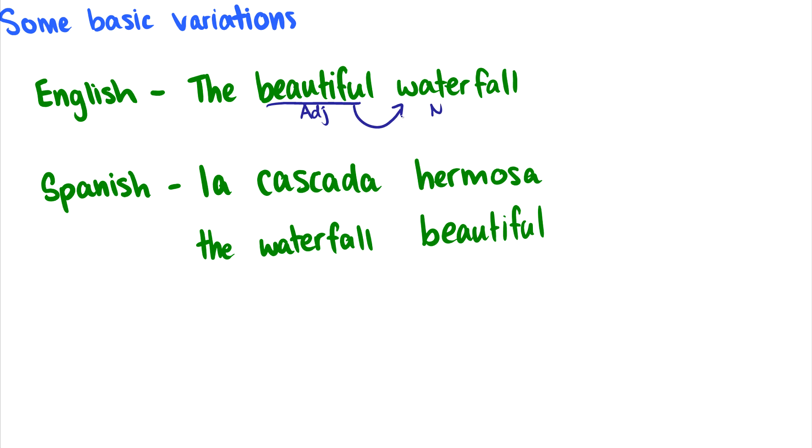Now in Spanish, they don't say the beautiful waterfall. Instead, they say the waterfall beautiful. And it has the same meaning. So we have an adjective modifying a noun, but the adjective comes after the noun. So these are one of these differences we see across languages, as something as simple as having adjectives come before nouns instead of after nouns, or adjectives coming after nouns instead of before nouns.